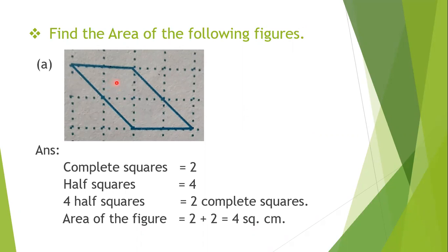See this figure — you can see it covers some complete squares, and the same way it also covers some half squares. This part is a half square, this part also covers a half square, here it is a half square, and here also you can see a half square. So how do we find the area in such cases? First, you will count how many complete squares — or full squares — it covers.